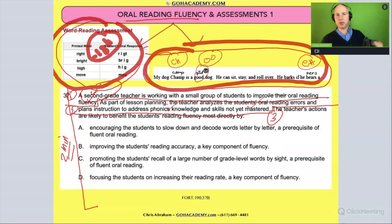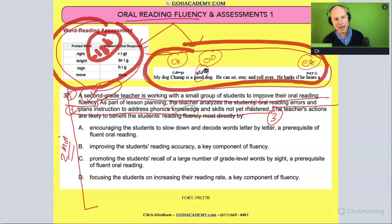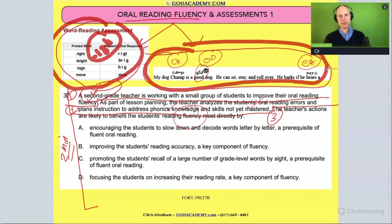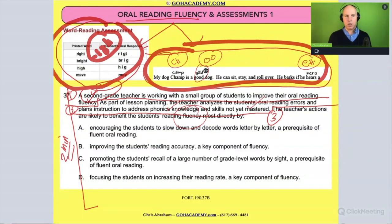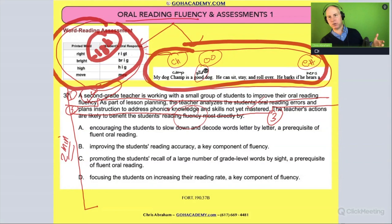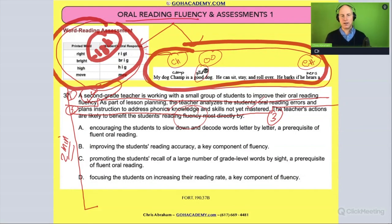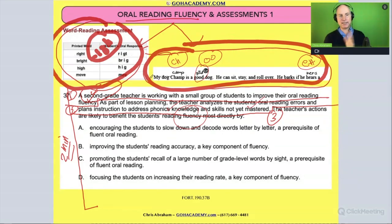'The teacher's actions are likely to benefit the students' reading fluency' — how? When you fix these errors in phonics and the student improves, they will make fewer mistakes. Fluency is made up of speed, accuracy, expression, and automaticity. What aspect of fluency goes up? If you fix these things, accuracy goes up automatically — that's the key connection here.